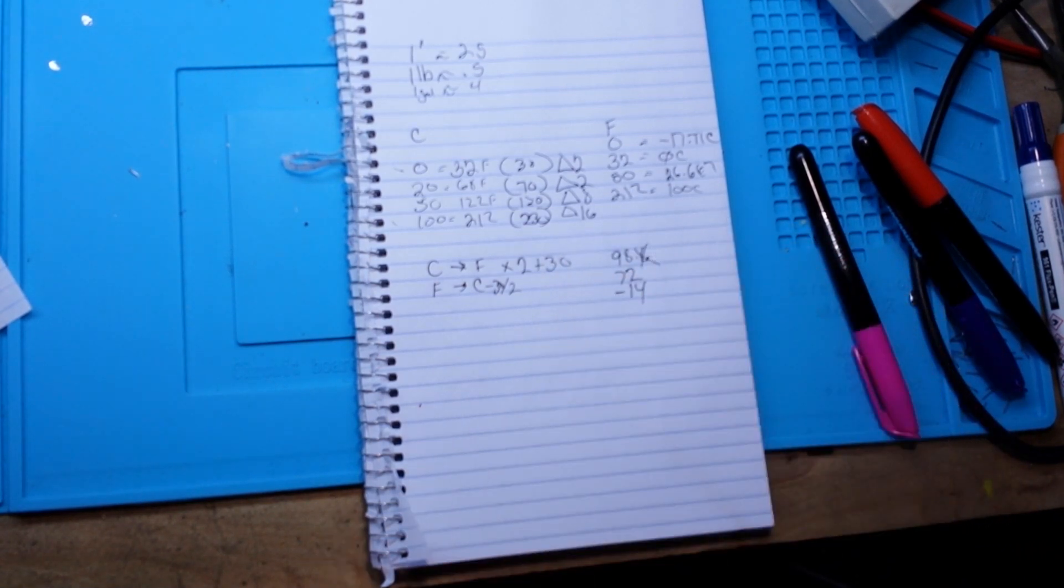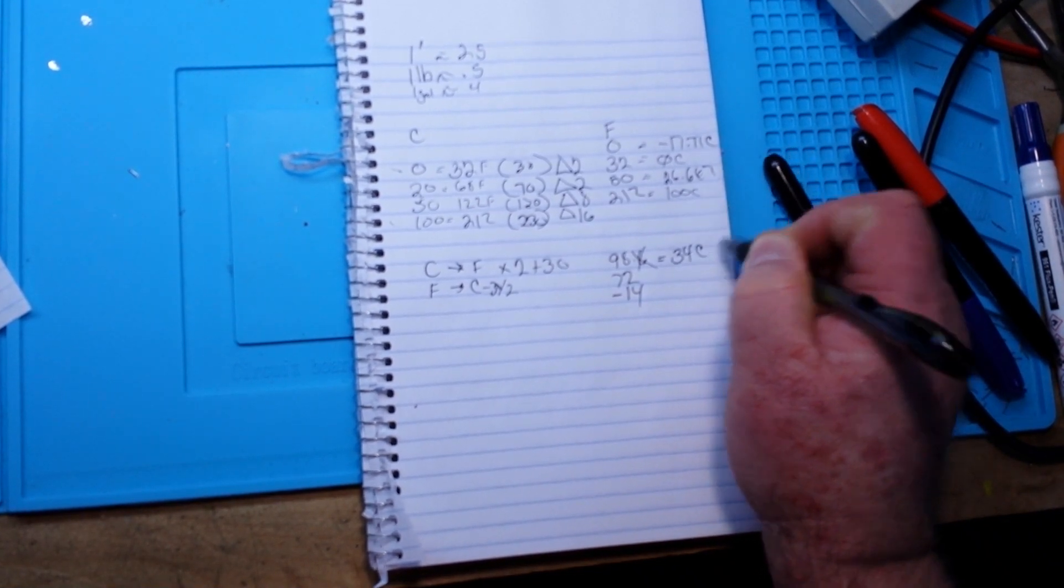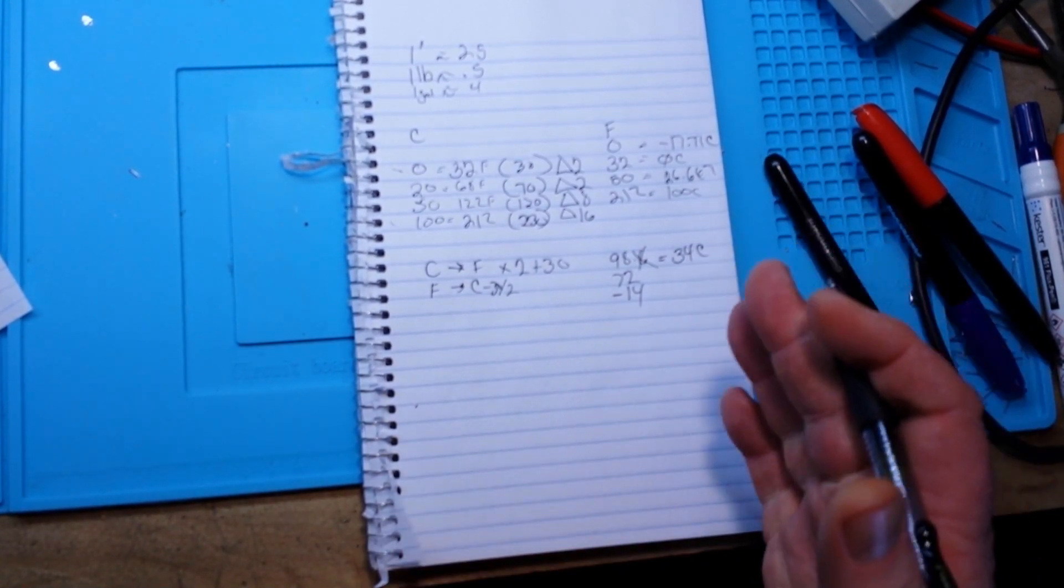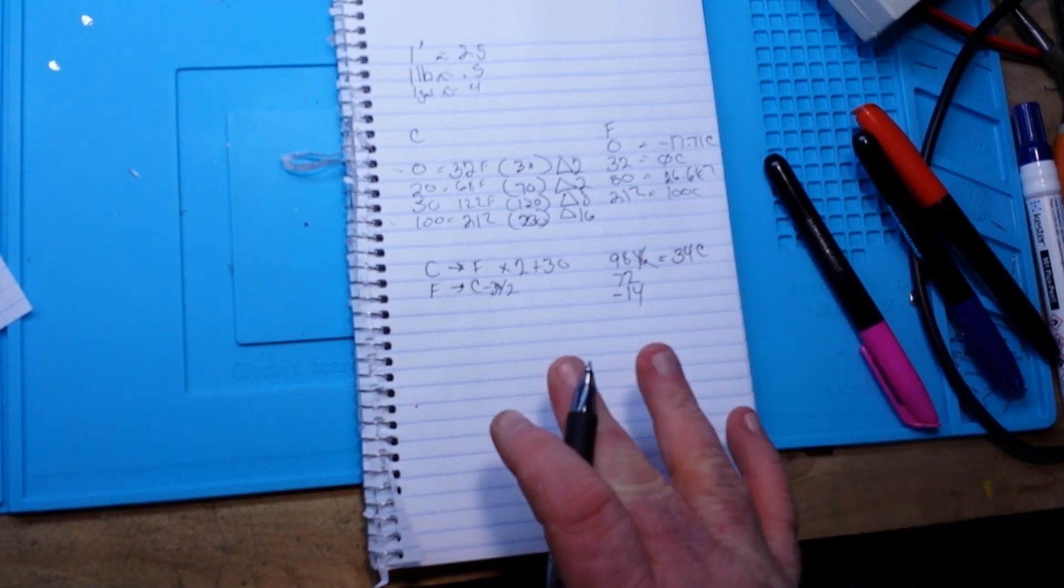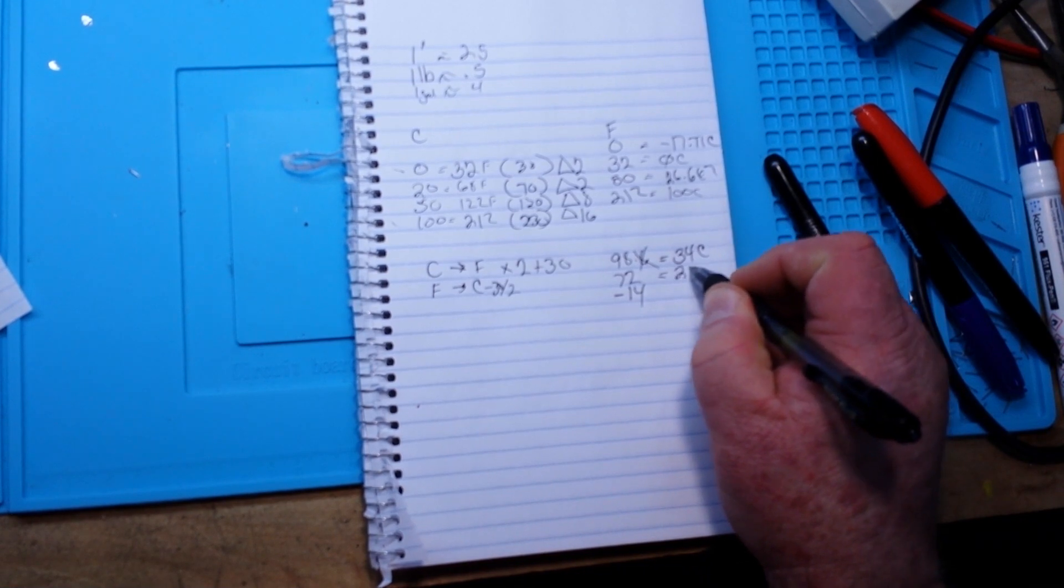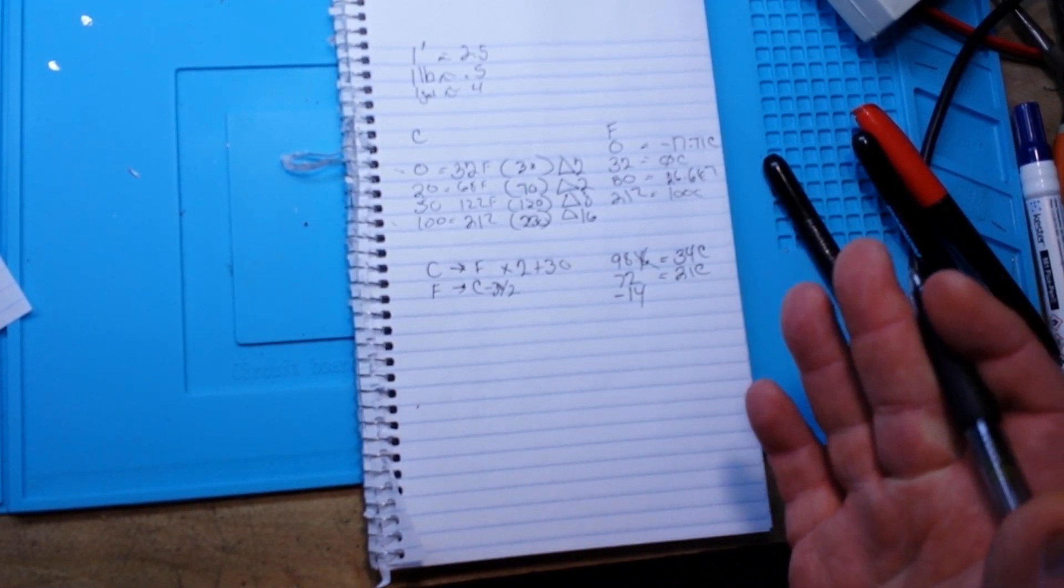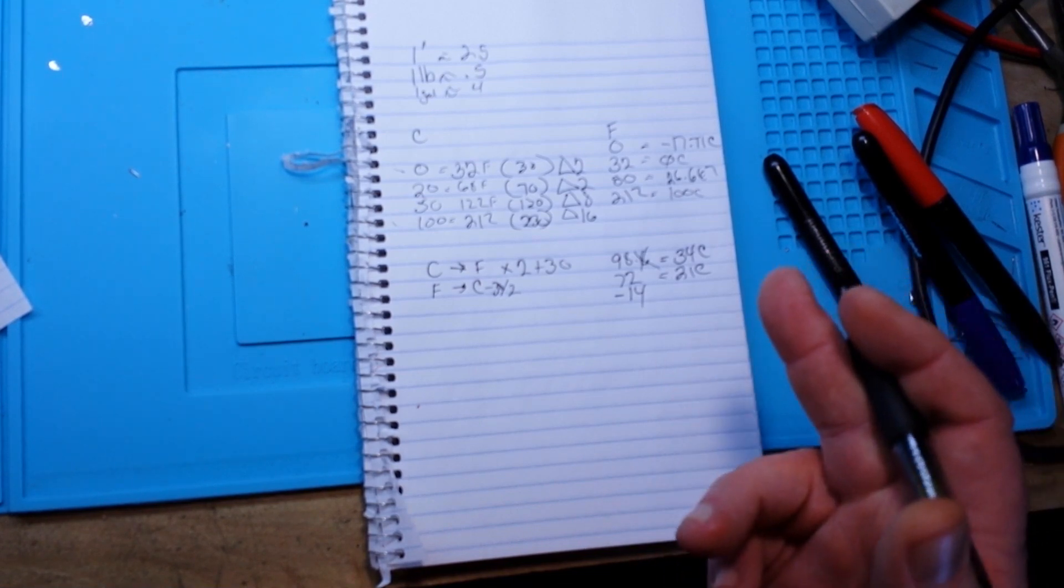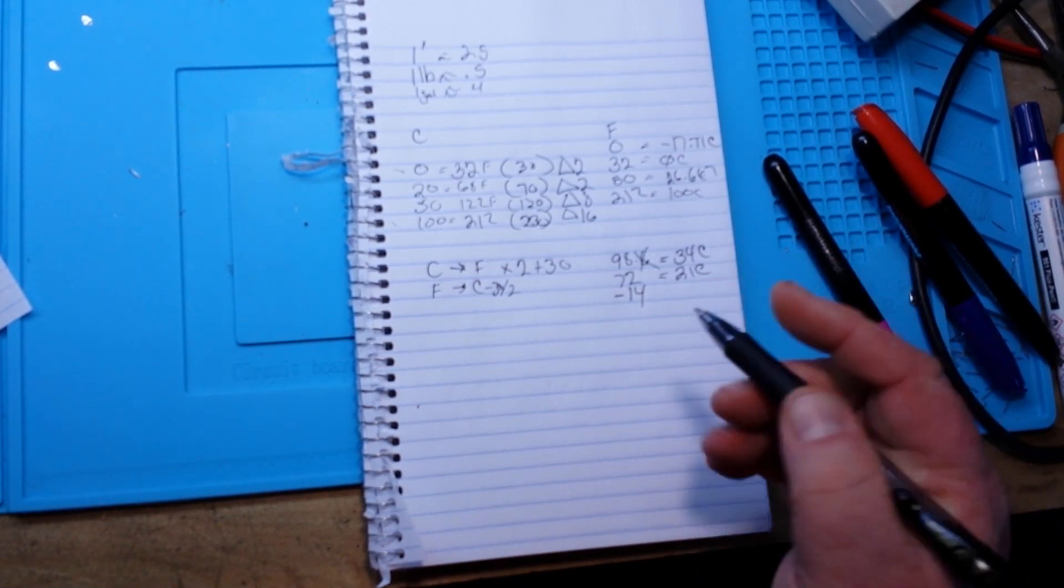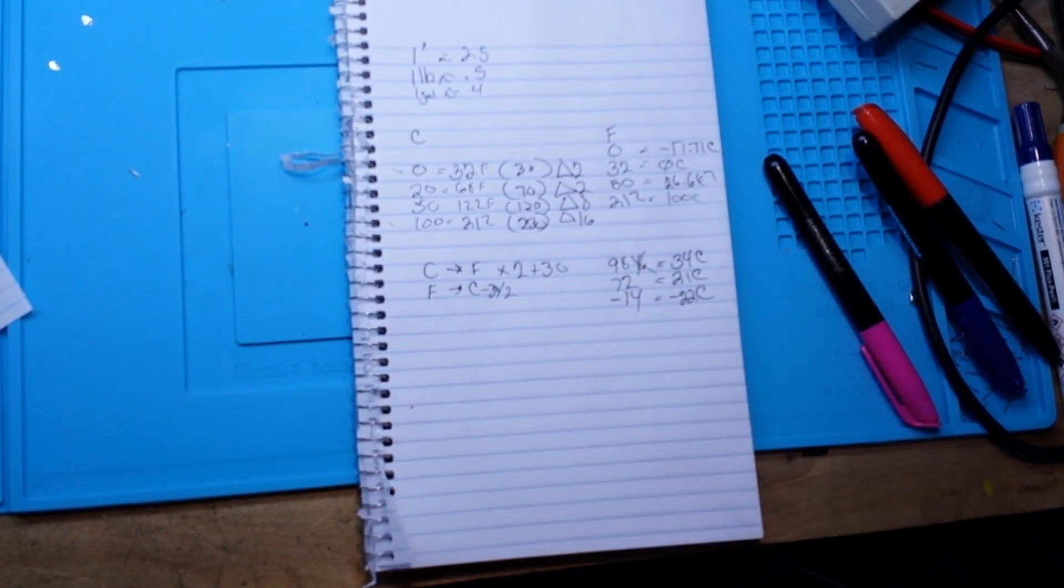Then we have 72 minus 30 which is 42, divided in half we get 21. Then we have our negative number just to show you it works in the negatives as well. Minus 14 minus 30 is minus 44, divided in half is minus 22 degrees Celsius.